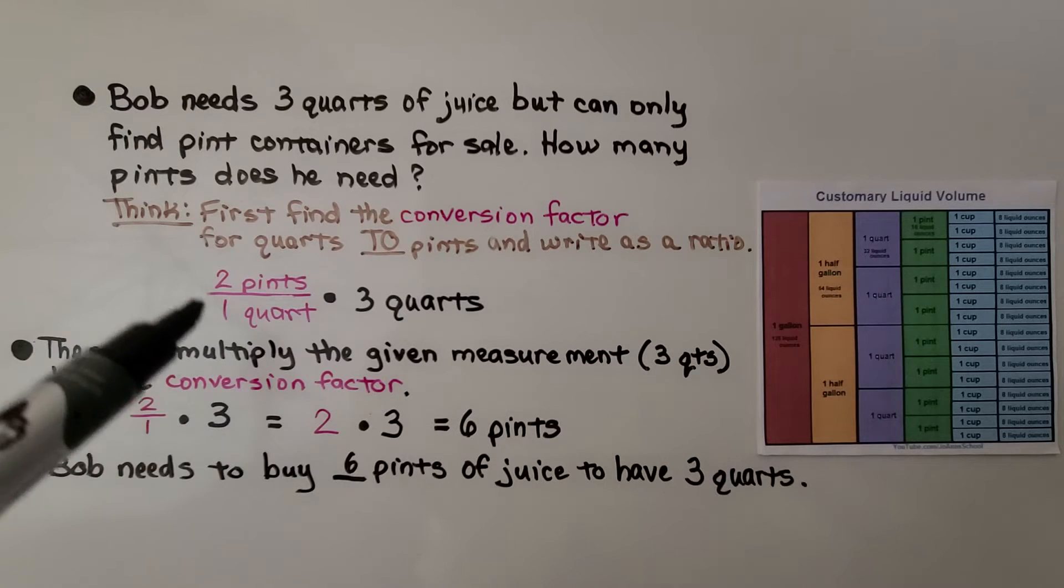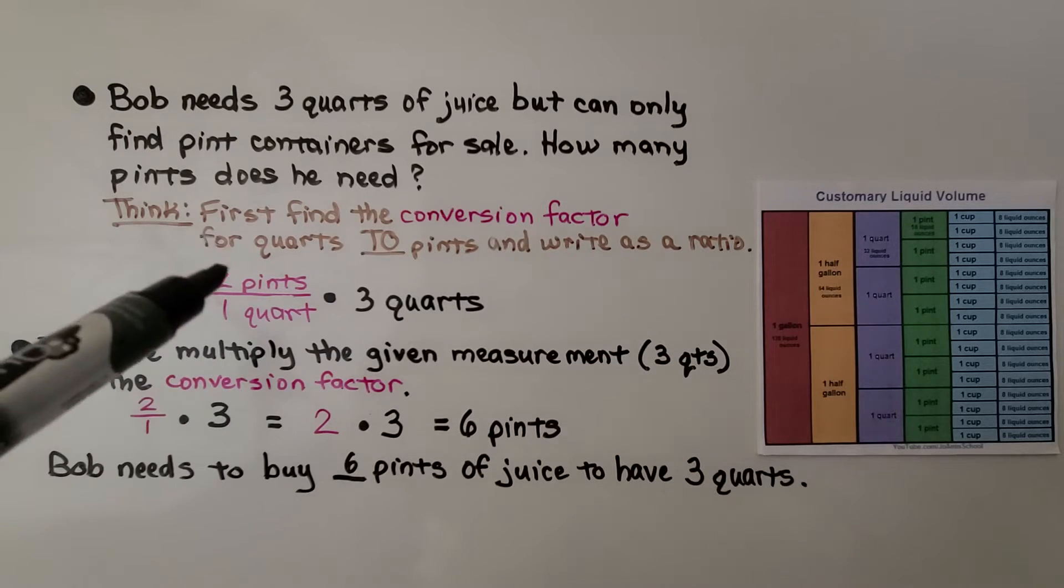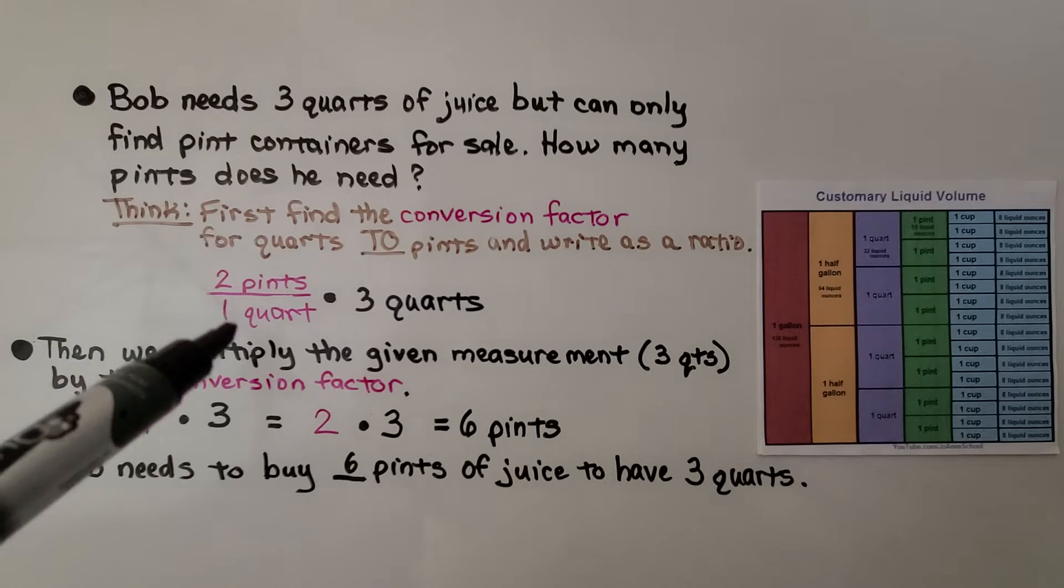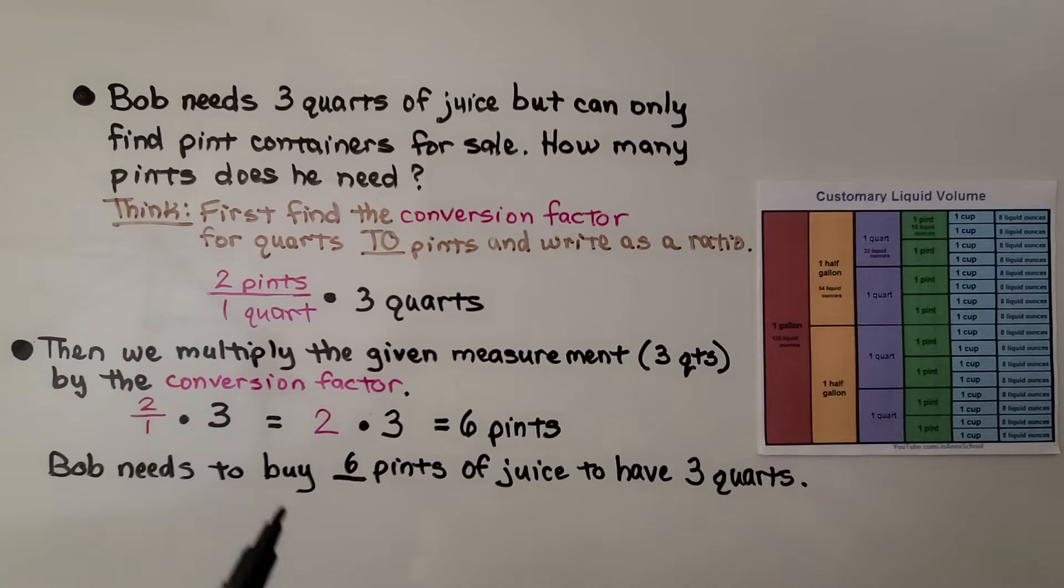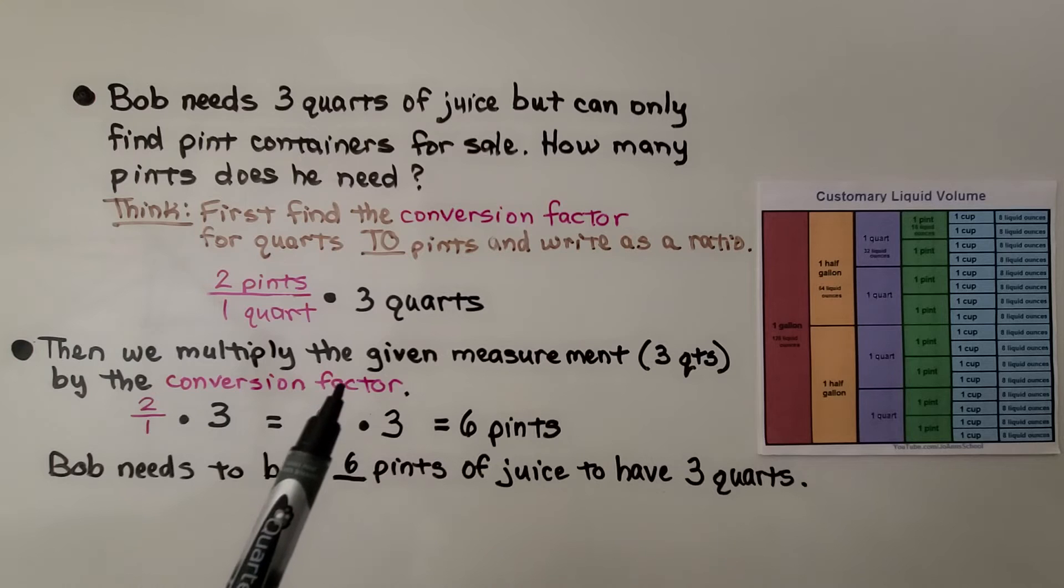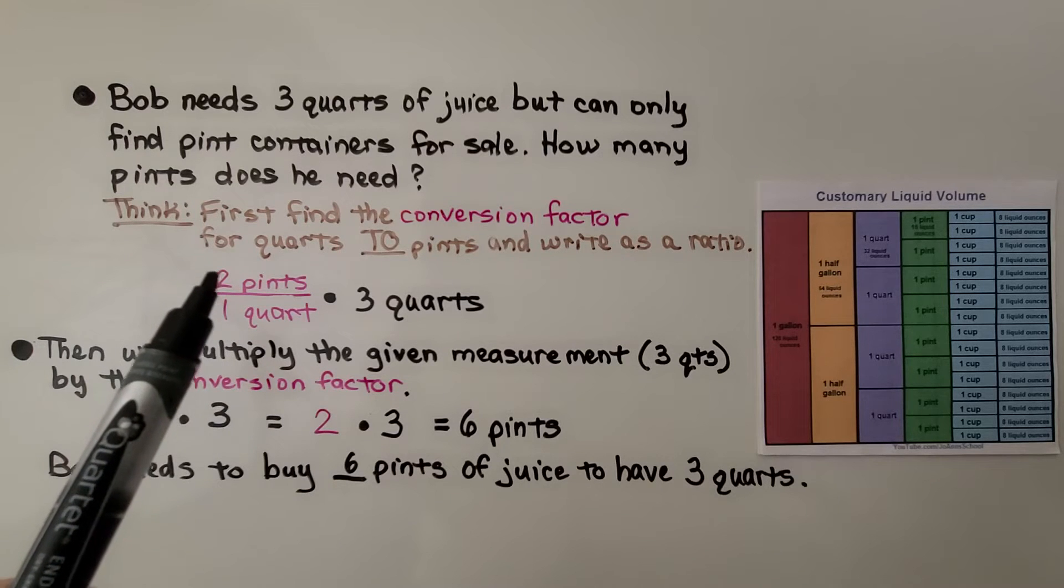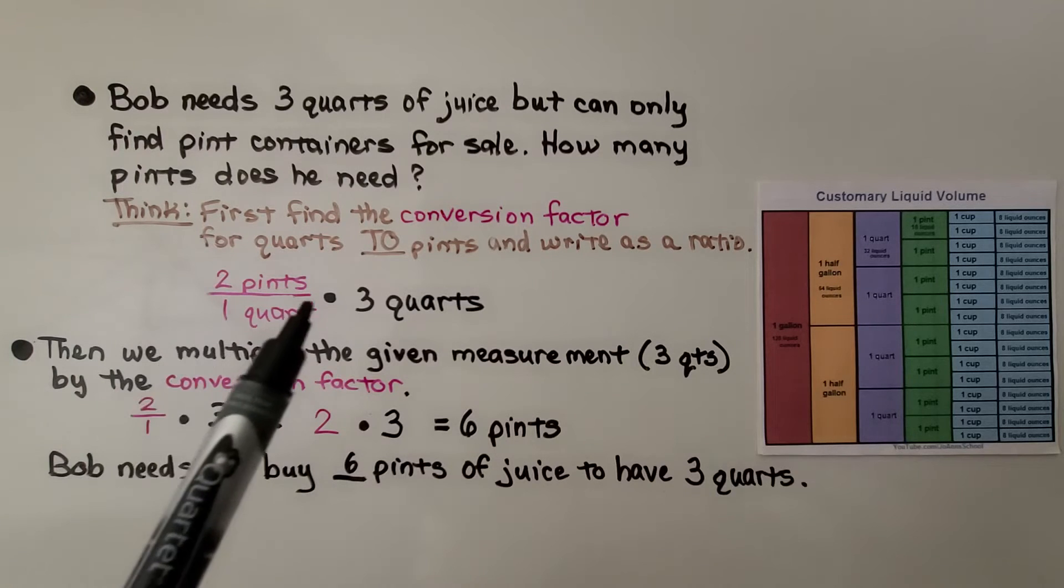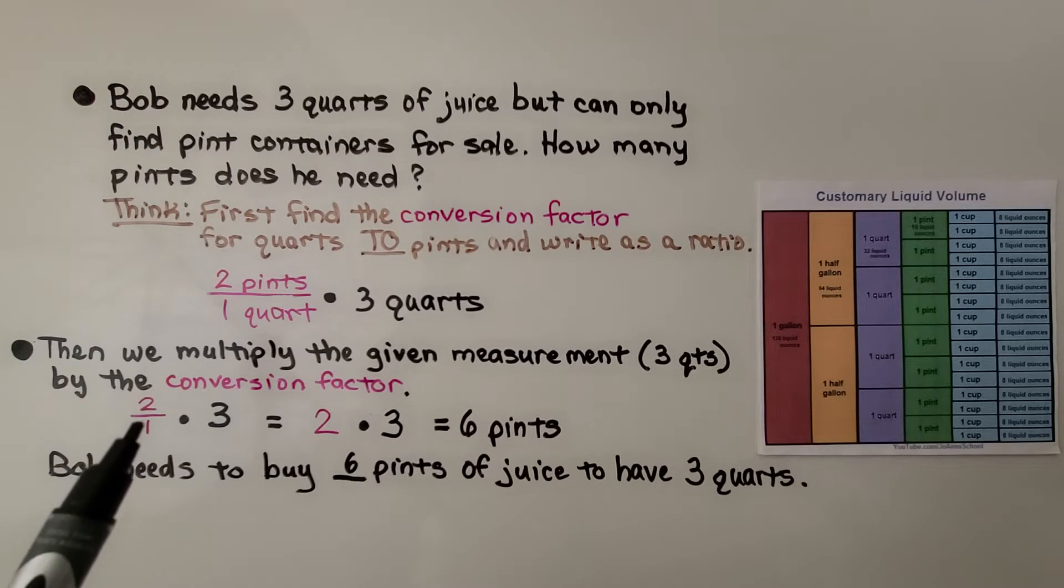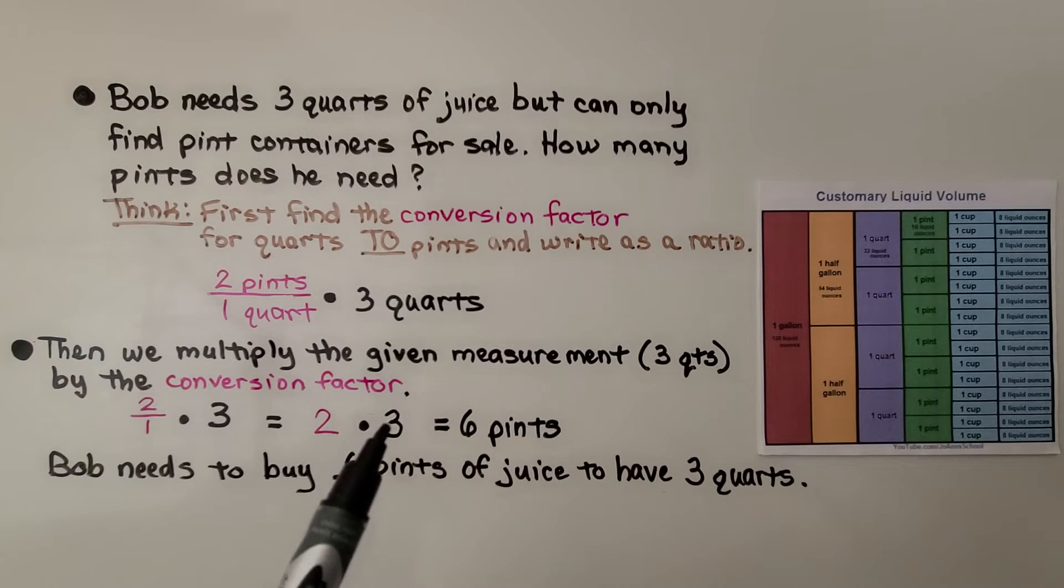So we have from a quart to 2 pints, we have 2 pints to 1 quart. And we're going to multiply the given measurement, the 3 quarts, by the conversion factor. So we've got 2 over 1 times 3. And 2 over 1 is 2 whole, isn't it? So we have 2 times 3, that's going to be 6 pints. So Bob needs to buy 6 pints of juice to have 3 quarts.